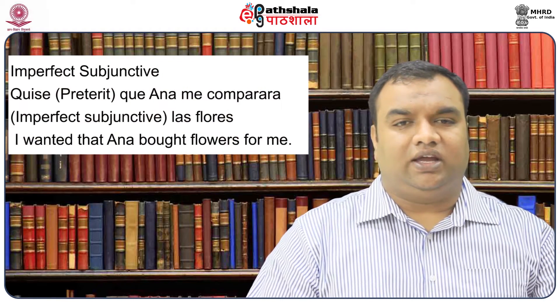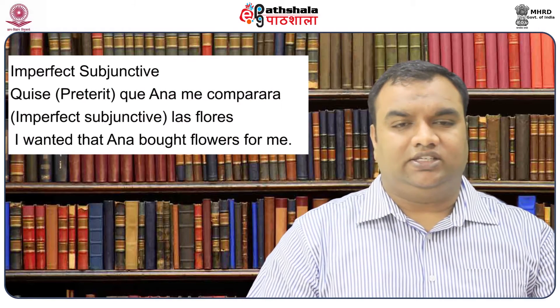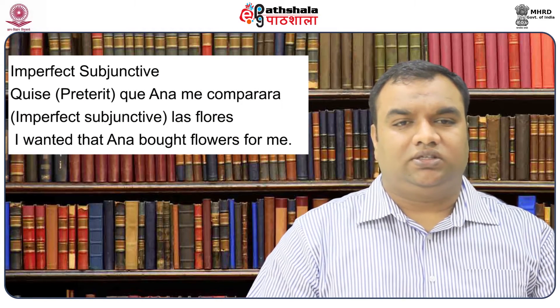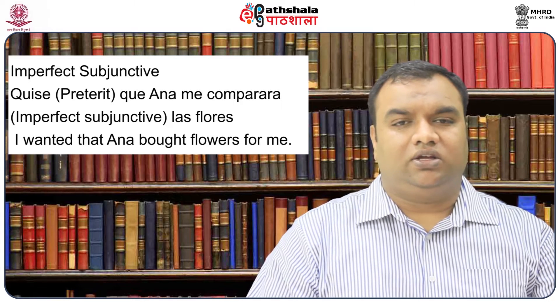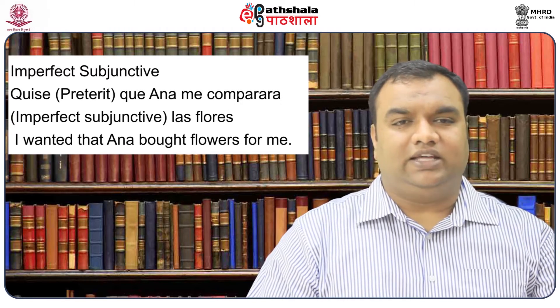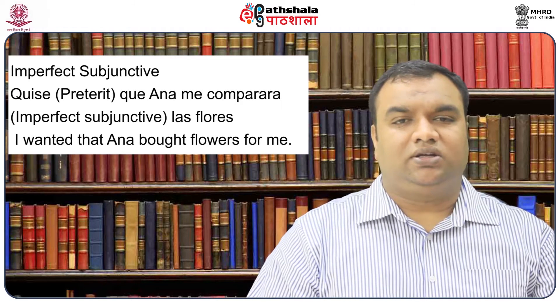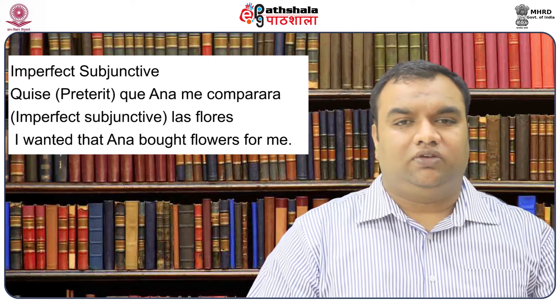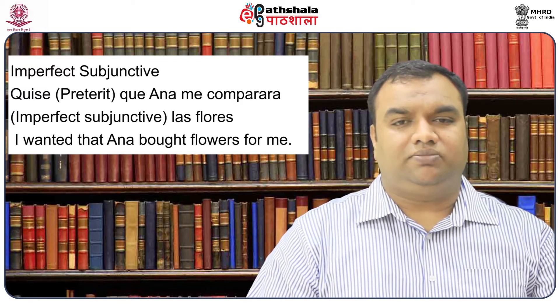Now let us see the sentence in the imperfect subjunctive form: quise que Ana me comprara las flores — I wanted that Ana bought flowers for me. Here, the verb in the main clause, querer, is conjugated in the preterit form as quise, and the dependent clause has the verb comprar which is conjugated in the imperfect subjunctive.